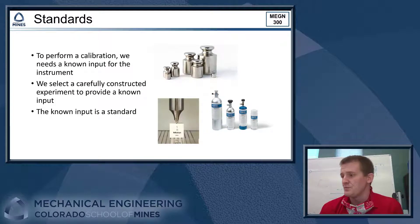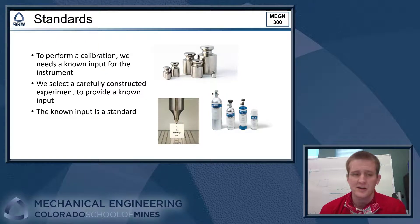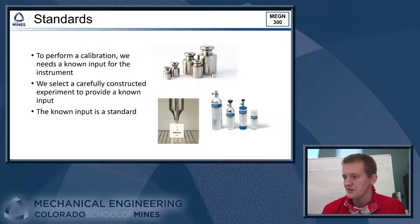All right, so to perform this calibration, we need these known inputs to the instrument. These known inputs are known as standards. So a standard is a carefully constructed experiment or some sort of input that we can put into an instrument to know if it's producing a correct output or correct its output. So a few examples of standards you might have seen before. We have things like these masses, these laboratory standard masses, that are all very precise pieces of metal that weigh a certain number of grams that we can put on a scale and see if its output is correct.